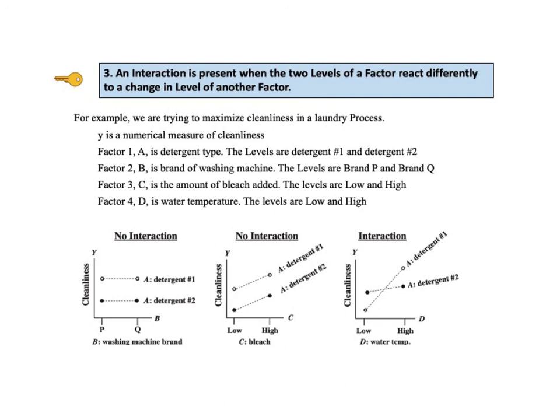Left diagram. It shows that detergent number 1 cleans better than detergent number 2. However, the brand of washing machine makes no difference. So the two levels of detergent type react the same to the brand of washing machine. They have no reaction at all to a change in the level of washing machine. Therefore, there is no interaction between X sub 1 and X sub 2. Note that the level can be a name, like the brand of washing machine, or a number. In the center diagram, an increase in the level of factor C, bleach, increases the value of Y by an equal amount for the two levels of detergent. There is no synergy or no canceling between bleach and detergent type. There is no interaction at all. Parallel lines indicate no interaction.